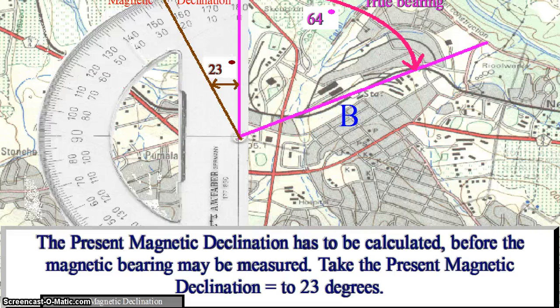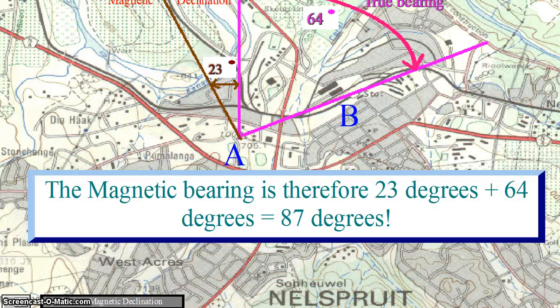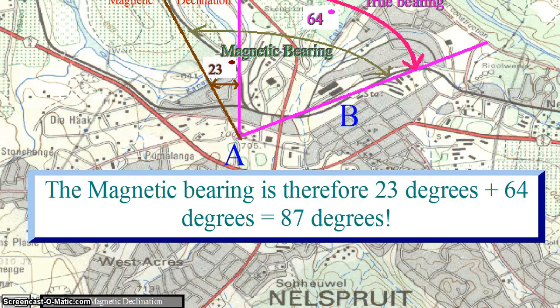In order to calculate the magnetic bearing, you must know what the present magnetic declination is. Take the present magnetic declination as being equal to 23 degrees. The magnetic bearing will therefore be the present magnetic declination, which is 23 degrees, plus the true bearing, which is 64 degrees, which will be equal to 87 degrees.